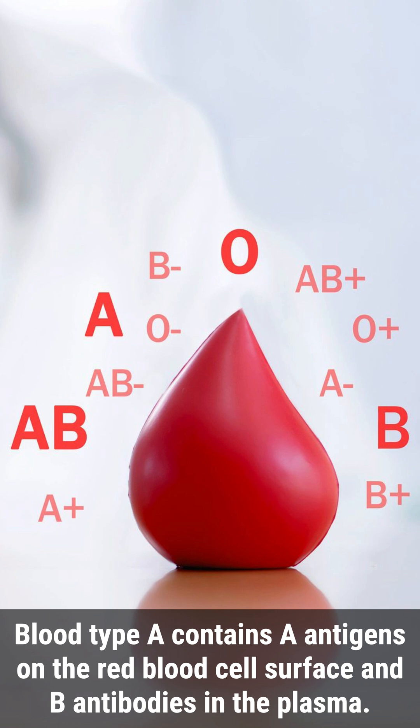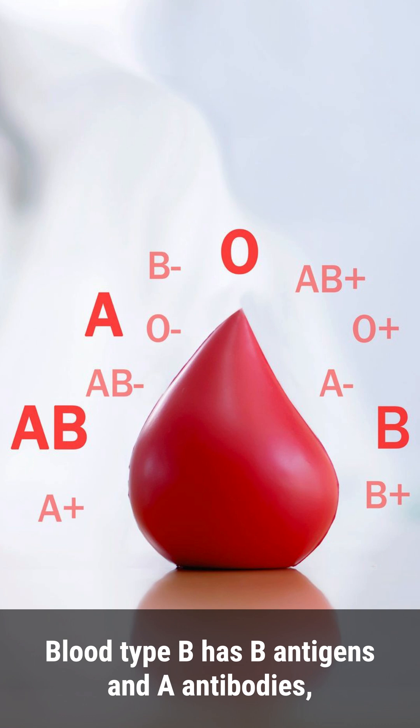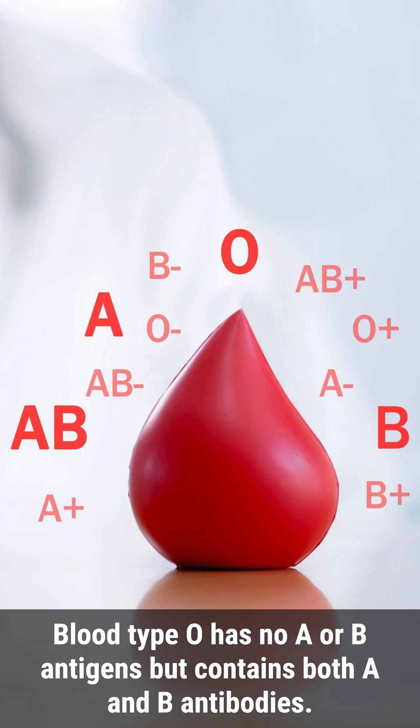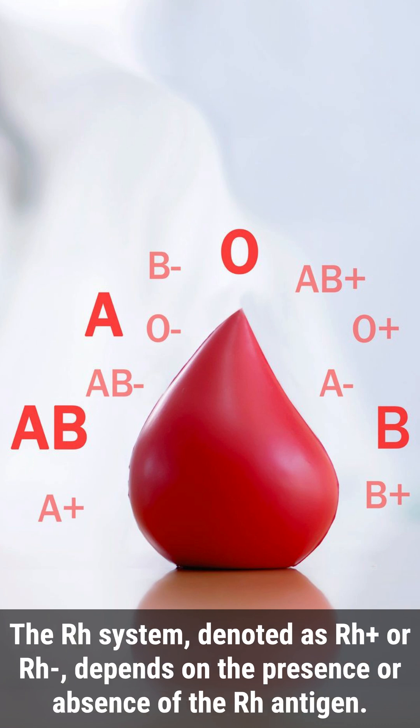Blood type A contains A antigens on the red blood cell surface and B antibodies in the plasma. Blood type B has B antigens and A antibodies, while blood type AB possesses both A and B antigens but lacks A or B antibodies. Blood type O has no A or B antigens but contains both A and B antibodies.